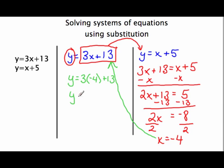3 times negative 4 is negative 12. So y equals positive 1. So our solution is the ordered pair negative 4, 1.